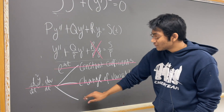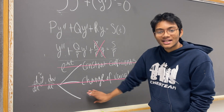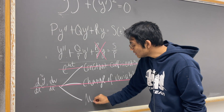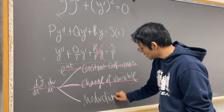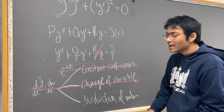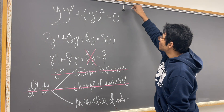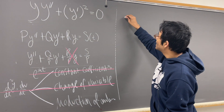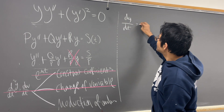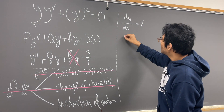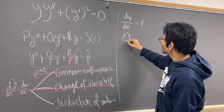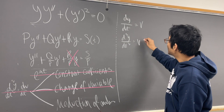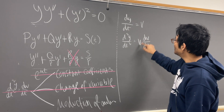So you're going to be left with one last resort. This is usually a nasty method that we don't like to use, but it is our last resort for this problem — and that's called reduction of order. What reduction of order looks like is as follows: we make the substitution dy/dt = v, and d²y/dt² is not going to be dv/dt. Instead, we use the chain rule and rewrite it as v dv/dy.